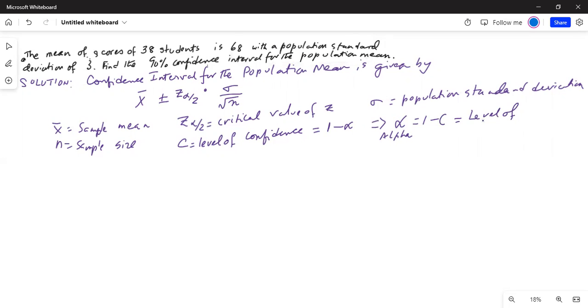c is your level of confidence, 90% confidence level. We always convert it into decimal. I'll draw a bell shepherd curve. This is the standard normal curve.